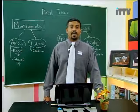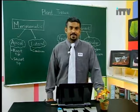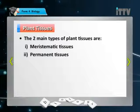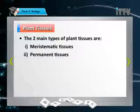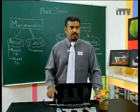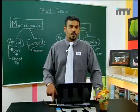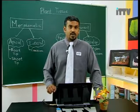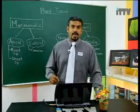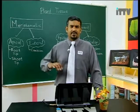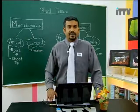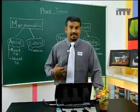Now let's take a look at the tissues found in the plant. There are two main types of plant tissue: meristematic tissue and permanent tissue. It is very important to remember meristematic tissue because the meristems of a plant are very important for its growth. You will be learning more about plants throughout chapters 5 to 9 in Form 4 and all through Form 5.